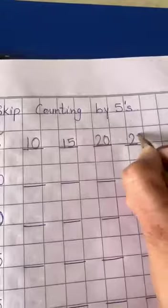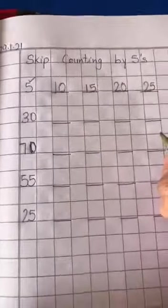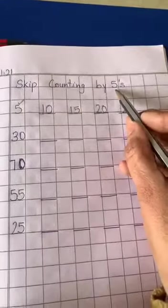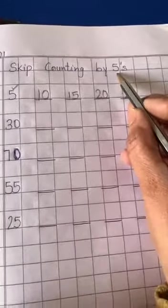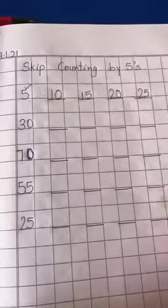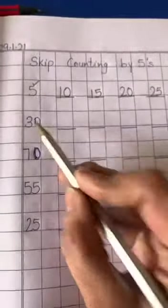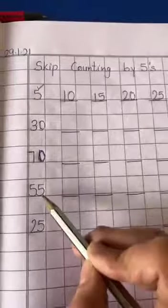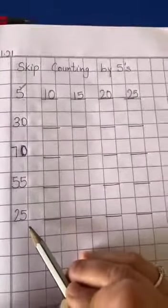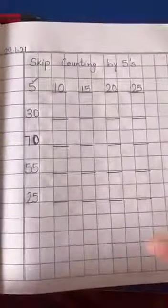So, write 25 and in this way by using your fingers, do skip counting by fives in your notebook. Start from 30, 70, 55 and 25. Thank you.